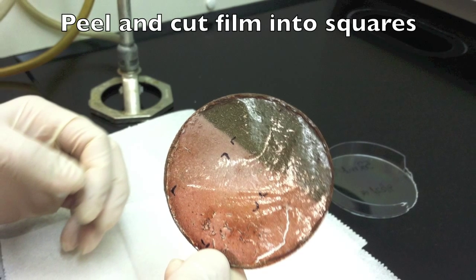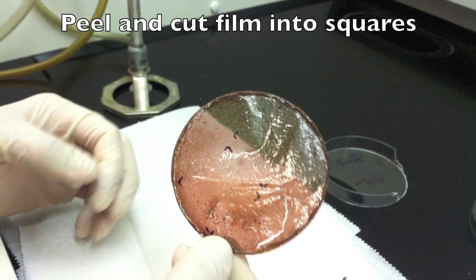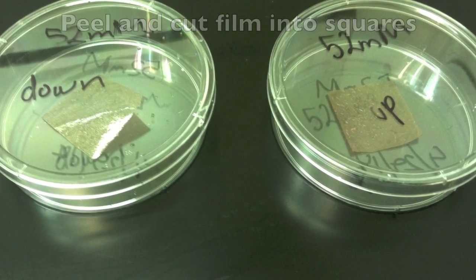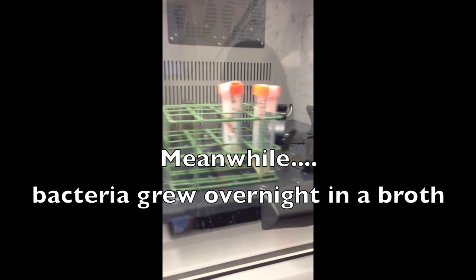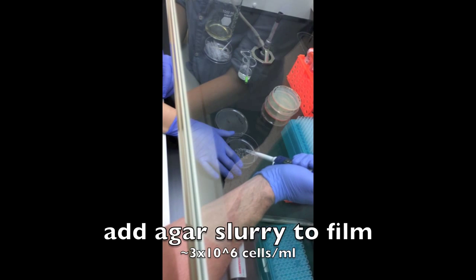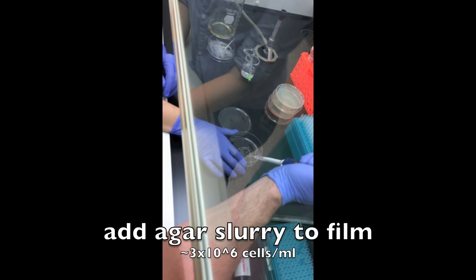The films were then peeled off from their petri dishes and cut into small squares in order to be analyzed antibacterially. We grew bacteria, E. coli, in a broth and then placed this in an agar solution, which allows bacteria to grow and is good for cultures. This agar was then placed onto the cut-up film squares.